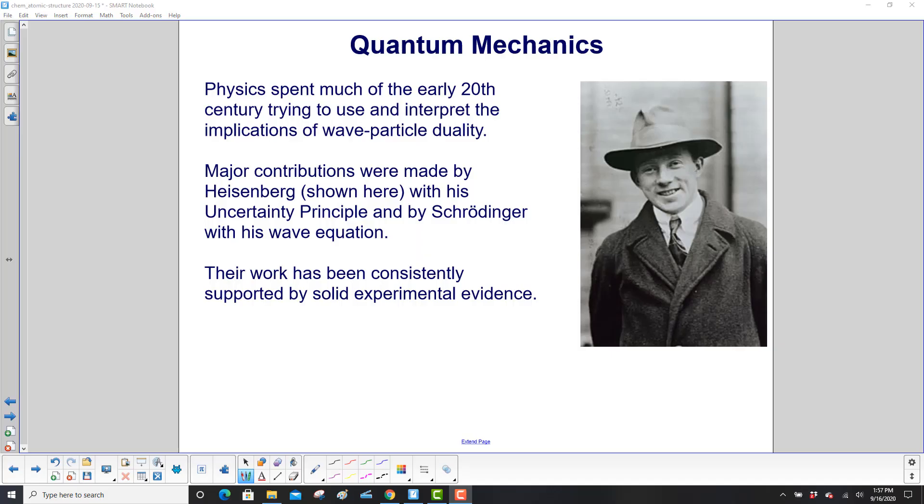Physics spent much of the early 20th century trying to use and interpret the implications of wave-particle duality. Major contributions were made by Heisenberg, shown here, with his uncertainty principle, the Heisenberg uncertainty principle,